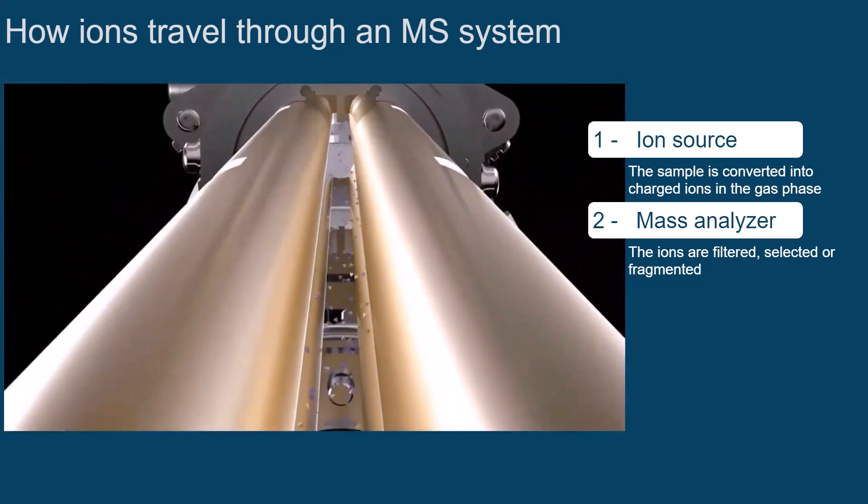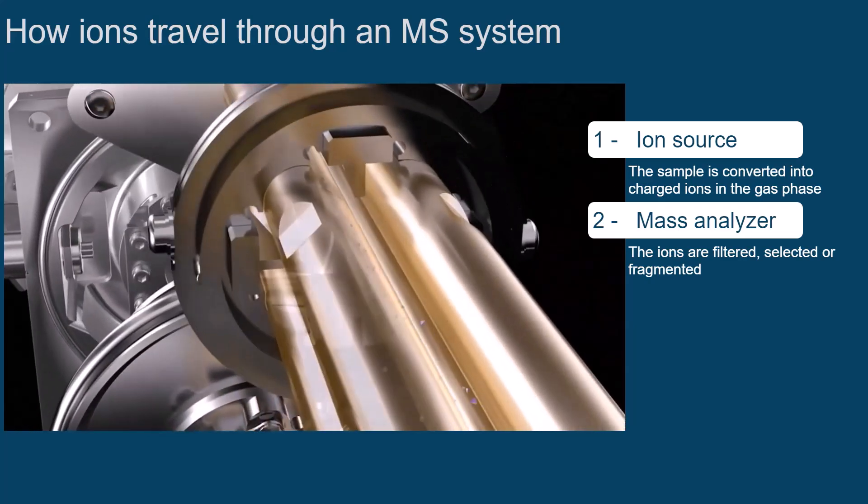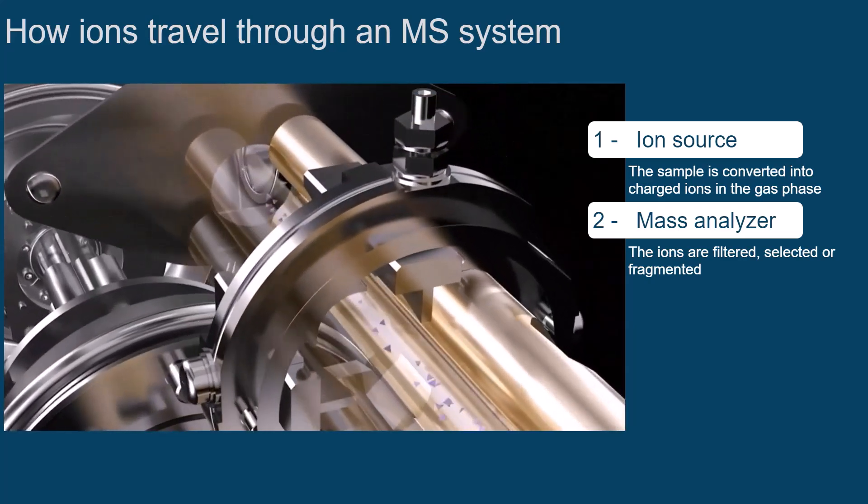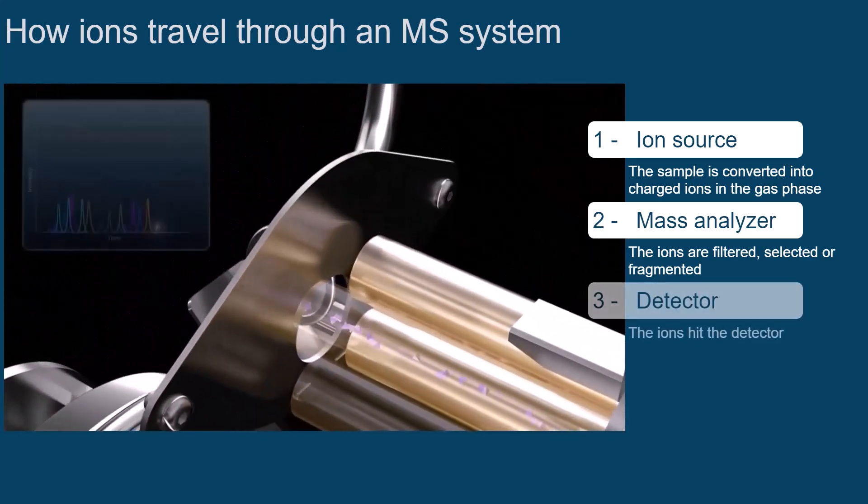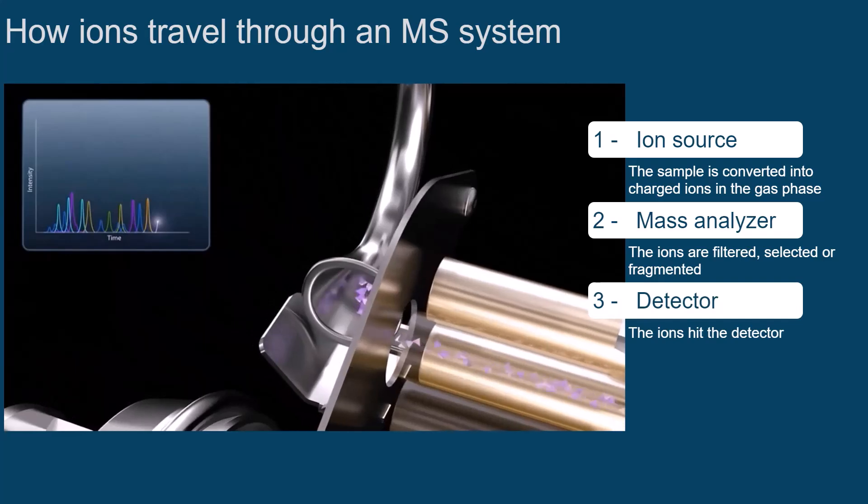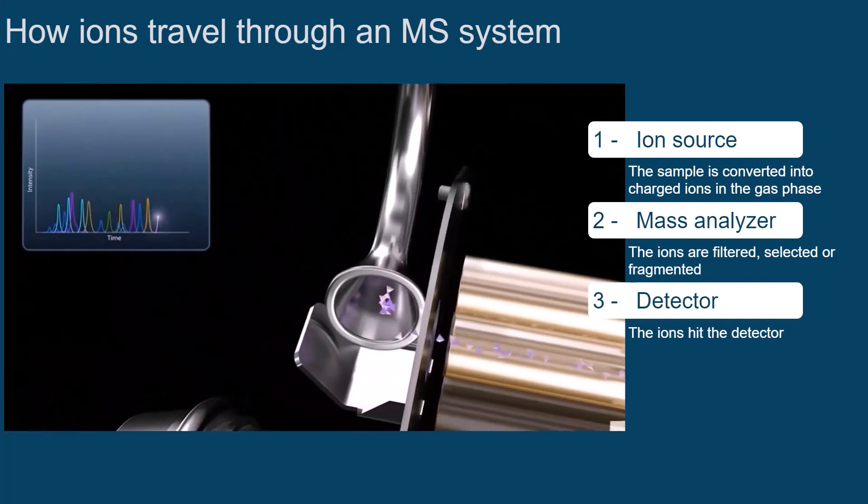In a triple-quadrupole, AC and DC voltages are used to separate ions. After separation, the ions hit the detector. The detector amplifies the signal and sends it to the workstation to convert the information into a mass spectrum.